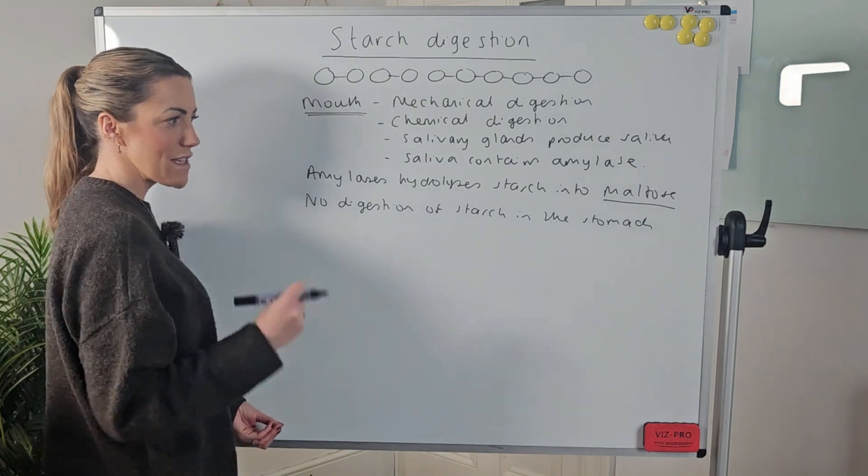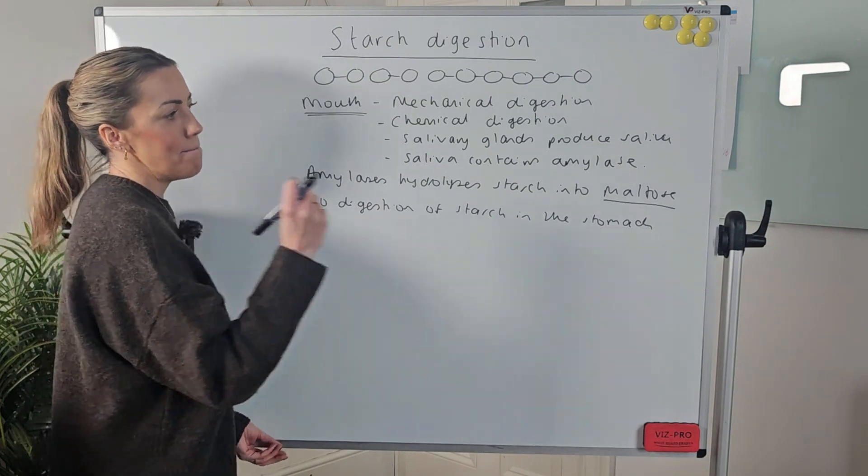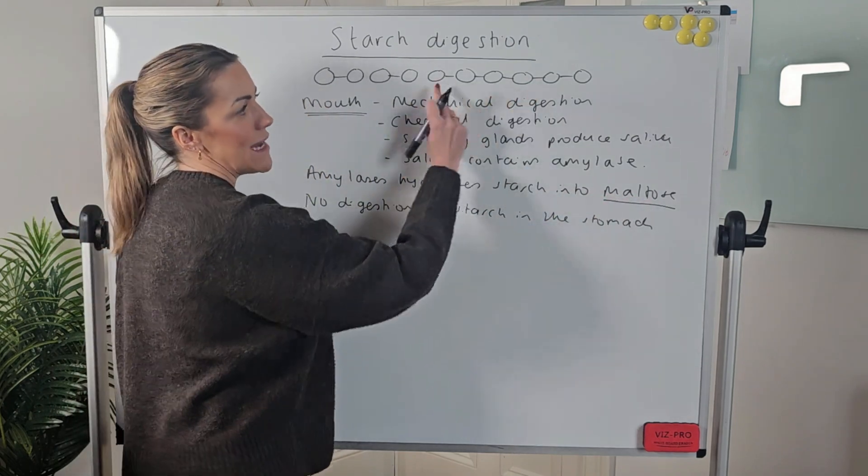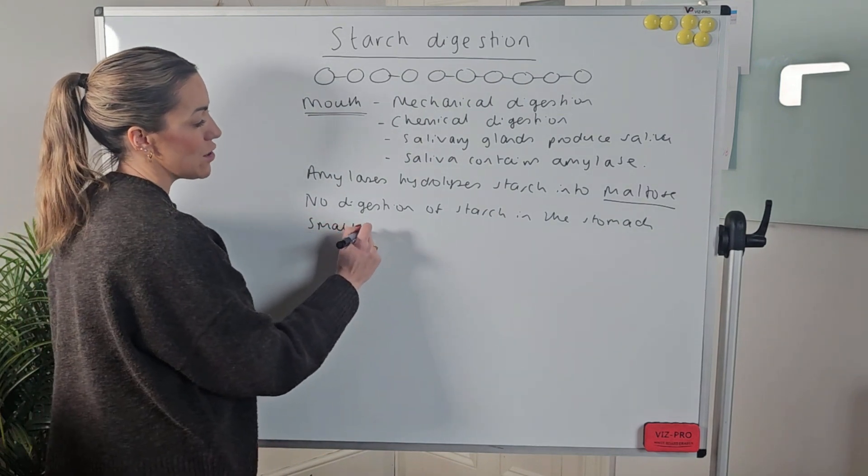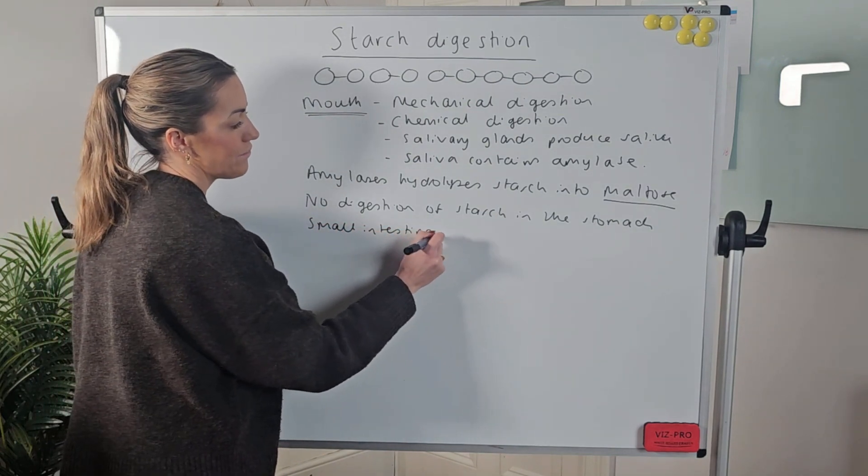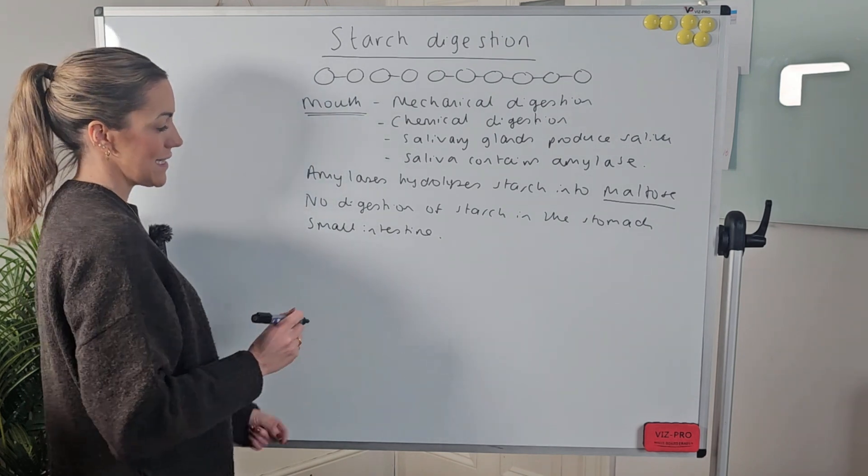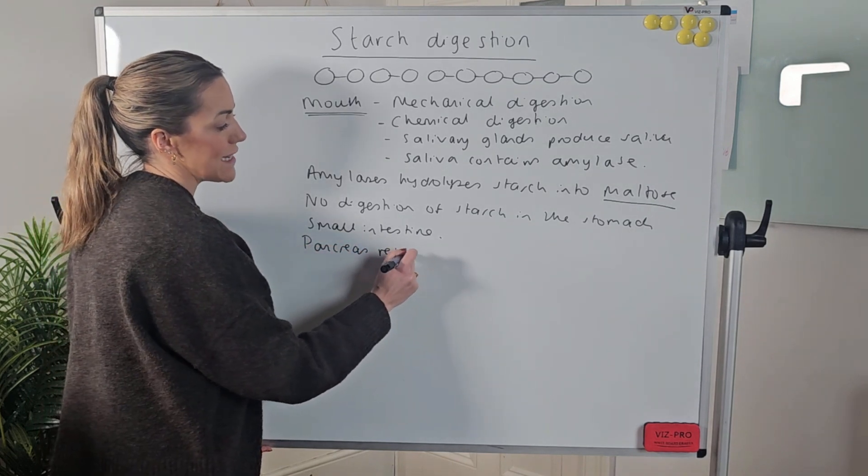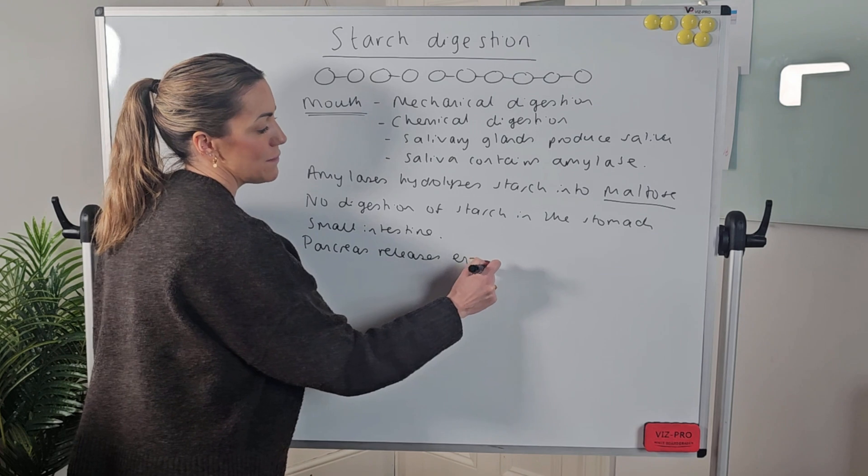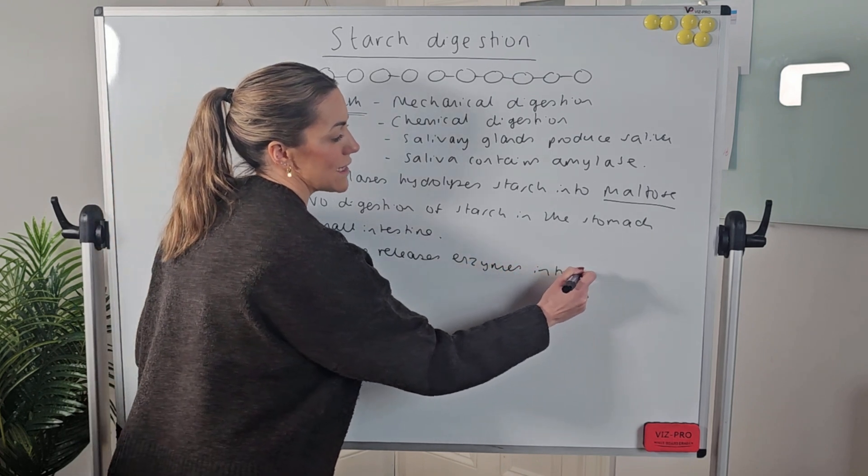But after it's been to the stomach, the maltose and any remaining starch that hasn't yet been digested is going to go into the small intestine. Now, as it goes into the small intestine, the pancreas releases enzymes into the small intestine.